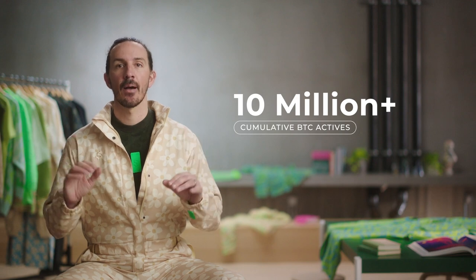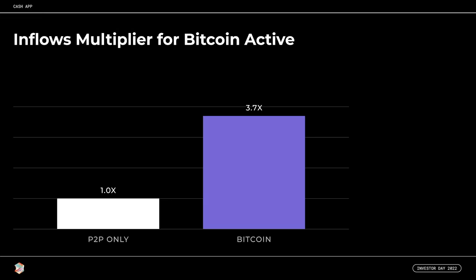It's remarkable the extent to which these Bitcoin experiences have resonated with our customers. Since launching Bitcoin in Cash App in 2018, we've had more than 10 million monthly actives buy Bitcoin within our app. Similar to what we see with our financial services products, Bitcoin monthly actives have brought in significantly more inflows to the ecosystem — nearly four times the amount in the first quarter than those who are using only peer-to-peer. These customers are more engaged across the Cash App ecosystem overall. We charge a spread when customers buy and sell Bitcoin — it's one of our highest monetization rate products, and it's also a monetization lever where money isn't actually leaving the ecosystem, so we have the opportunity to monetize those inflows multiple times.